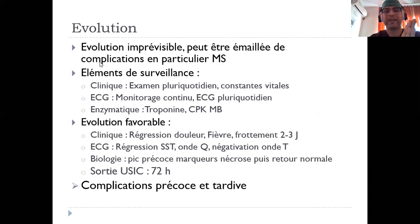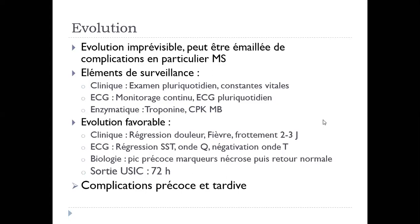Évolution. L'évolution, elle est imprévisible, elle peut être émaillée de complications, en particulier aux morts subites. Donc là, je vais insister sur ce point-là. Plus de 50% de la mortalité liée au syndrome coronarien aigu elle est en rapport avec des troubles du rythme,